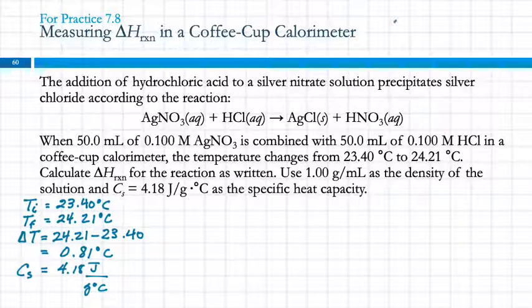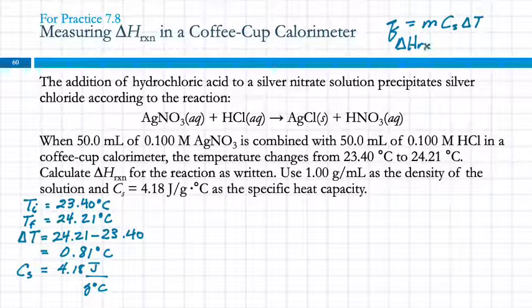The equation, the place to start for all of these sorts of calculations is Q equals MC delta T. I'm trying to find delta H. Delta H for the reaction is equal to Q for the reaction, which is minus Q for the solution. I've got the temperature change for the solution. I've got the specific heat capacity for the solution. What else do I need? I need the mass of the solution.